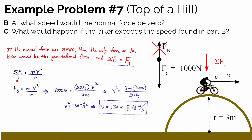Previously, when the biker was moving at 5 meters per second, the normal force was a little over 100 newtons. If they increase their speed by just about half a meter per second while going over the top of the hill's crest, the normal force would essentially go to zero.